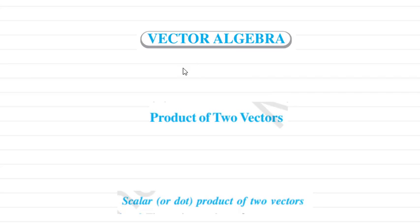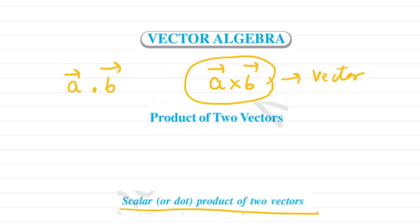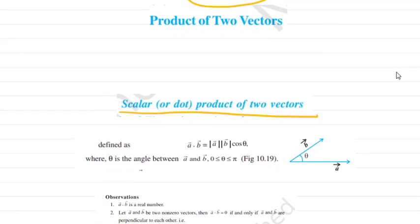In vector algebra, the product of two vectors can be scalar or vector. Given vectors a and b, there are two kinds of products: the dot product, whose result is a scalar quantity, and the cross product a cross b, which has both magnitude and direction, making it a vector. So this is the dot product and this is the cross product.